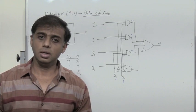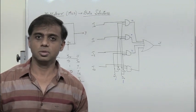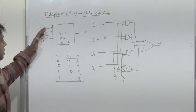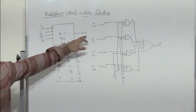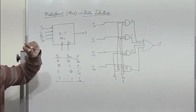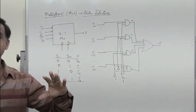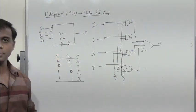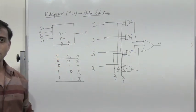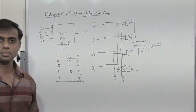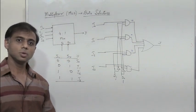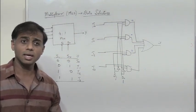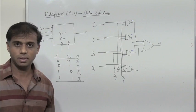So in a multiplexer or data selector, we are basically selecting one of the inputs to the output, and this selection is done by using select lines. In the next section, we will see more about multiplexers and demultiplexers.